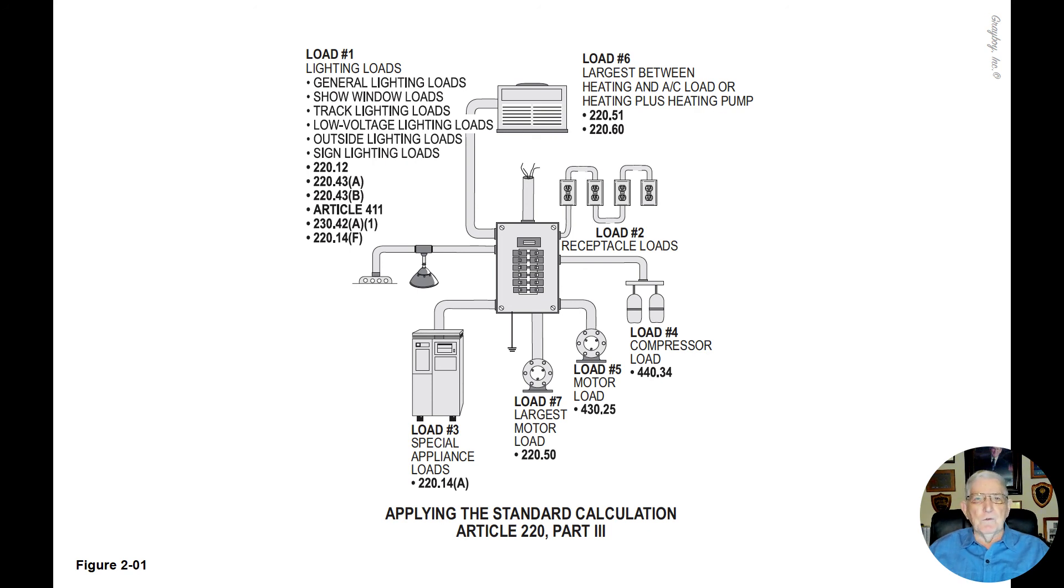So it's pretty easy now for you as a test taker to go to 210.3, know all about your branch circuit maybe feeding the particular motor or air conditioner or welder, and then go to table 240.4G.